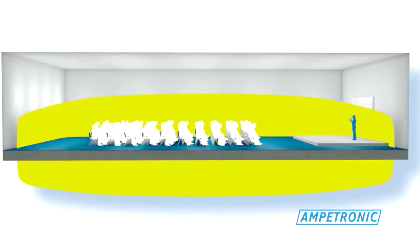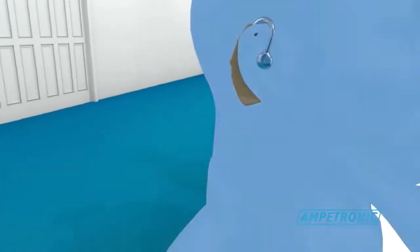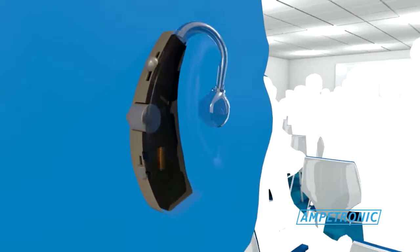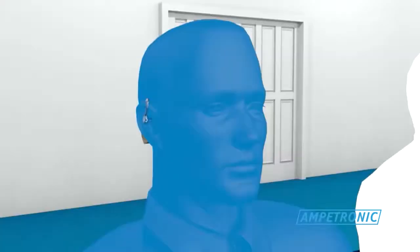International Standard stipulates performance for field strength and consistency throughout the listening area. The magnetic field induces a current in the telecoil, which is then translated into audio by the hearing aid, transferring it directly to the ear canal using the hearing aid's own speaker.